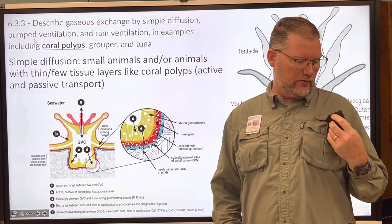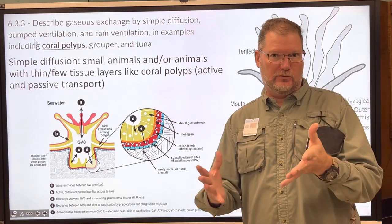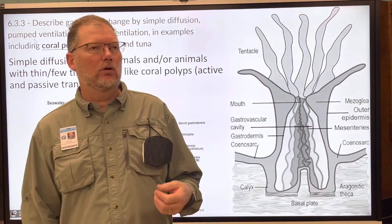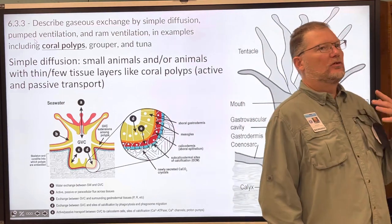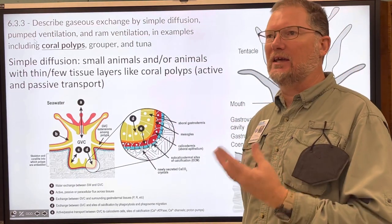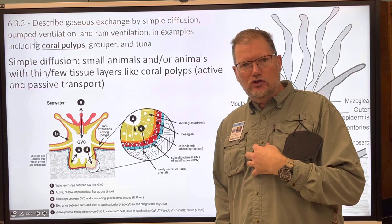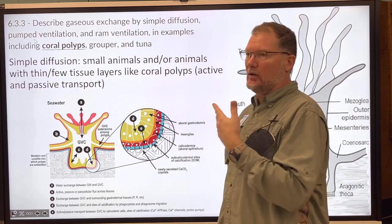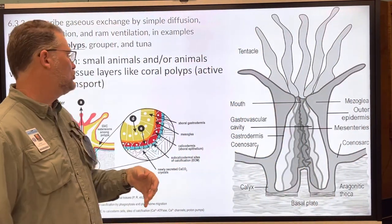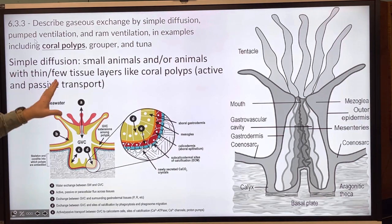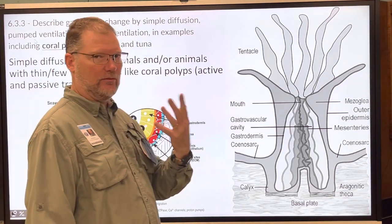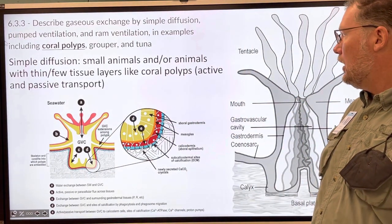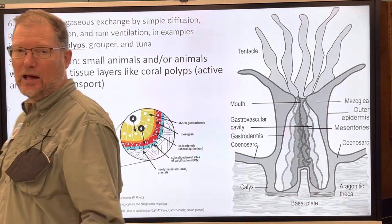This is part three of the theory notes, the last part. We're still talking about how marine organisms survive in such a salty environment — how they get their oxygen and get rid of their carbon dioxide. In this case we're talking about simple diffusion over tissues, and in a moment we'll talk about how fish get water over their gills.